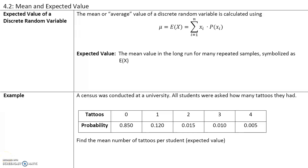In section 4.2, we will talk about the mean and expected value of a discrete random variable. The mean or the average value of a discrete random variable is calculated using the following formula: the mean or the expected value is the sum of each value times the probability of that value.